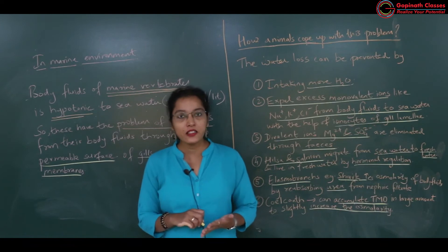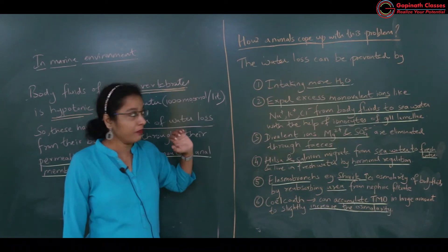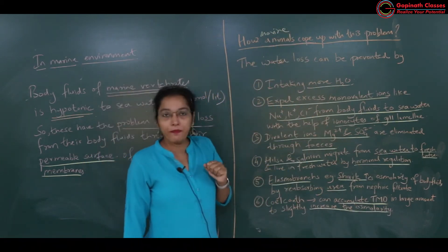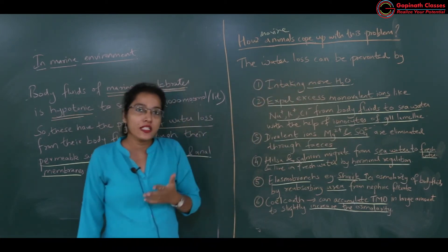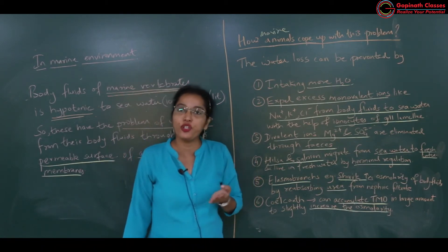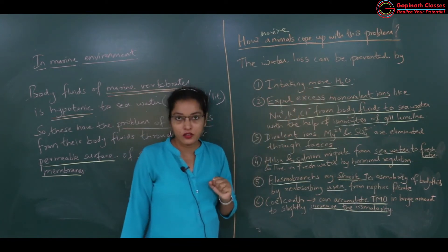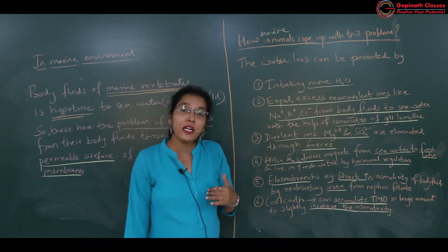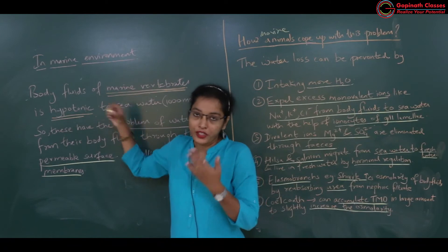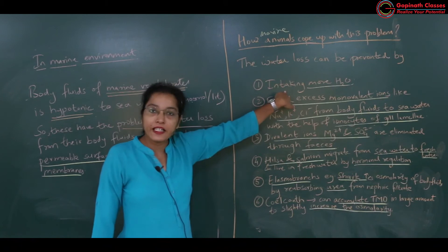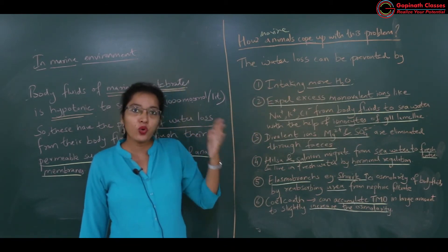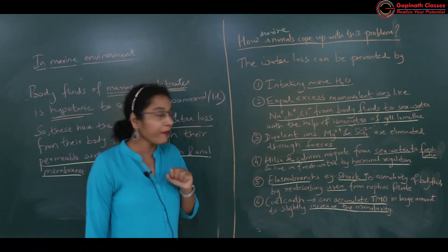To prevent this water loss, there are certain adaptations seen in marine vertebrates. Water loss can be prevented by drinking more water — by intaking more water, the solvent concentration in the body fluid can be maintained. However, this water intake must be limited, because the body fluid is already hypotonic and the solute concentration should not increase beyond a certain limit.